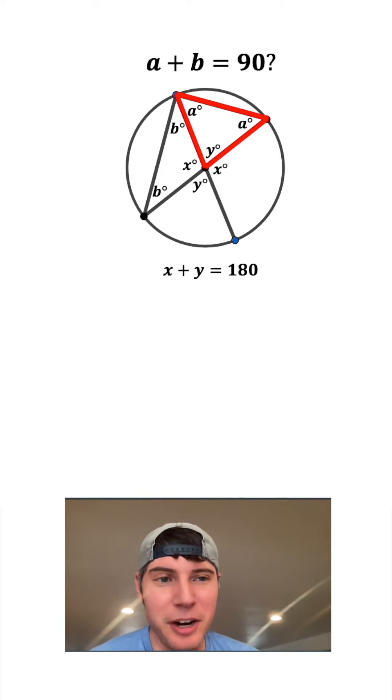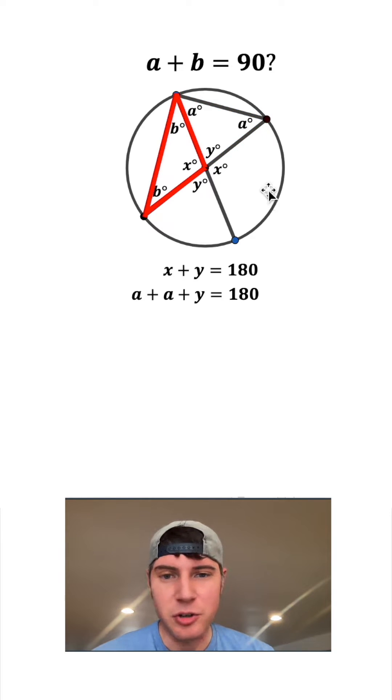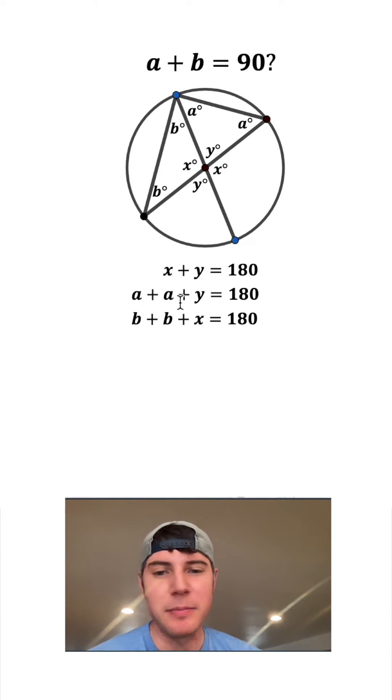Now let's look at this triangle right here. We know these three angles have to add up to 180 degrees. So we can say A plus A plus Y equals 180. Same thing in this triangle. So we can say B plus B plus X equals 180. Now we can clean this up. A plus A is the same thing as 2A and B plus B is the same thing as 2B.